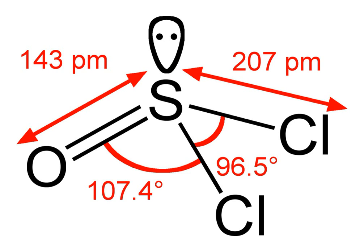The major industrial synthesis involves the reaction of sulfur trioxide and sulfur dichloride: SO3 plus SCl2 yields SOCl2 plus SO2.